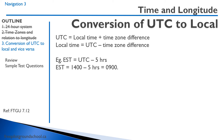Local time is UTC minus the time zone difference. For example, we're at 1400 UTC and we want to figure out Eastern Standard Time. It's a five-hour difference. So 14 minus 5 is 9 o'clock.